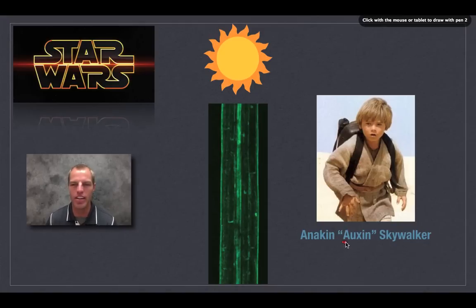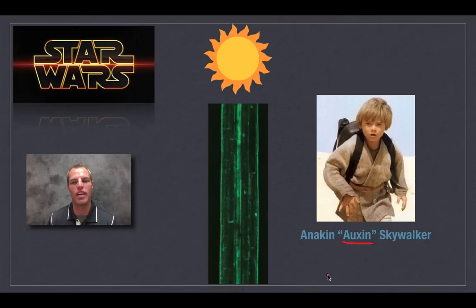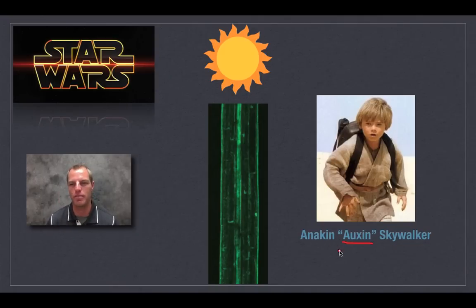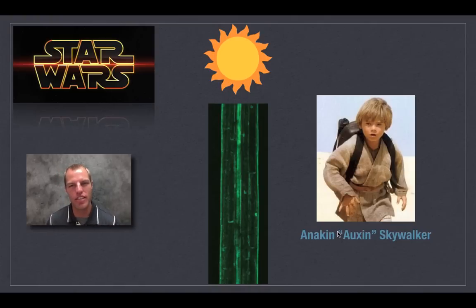Auxin is a hormone that causes cells to elongate. When cells elongate, that causes the plant to grow — and in the case of phototropism, to grow towards the light. Anakin, our auxin, is strong in the force.